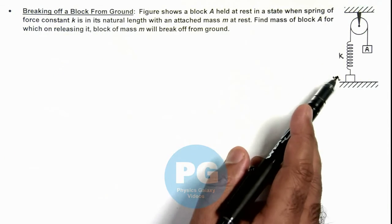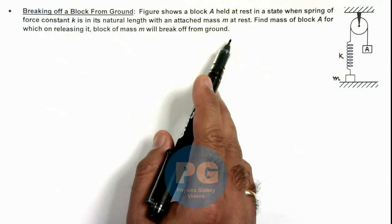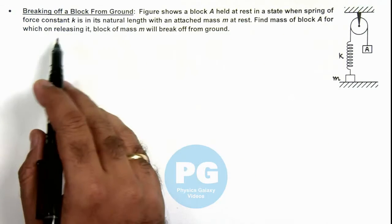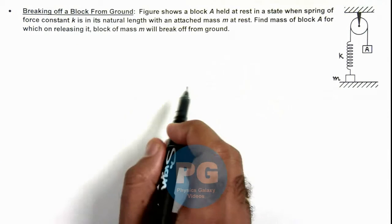And it is attached to a mass m which is also at rest. And we are required to find the mass of block A for which on releasing it, block of mass m will break off from ground.